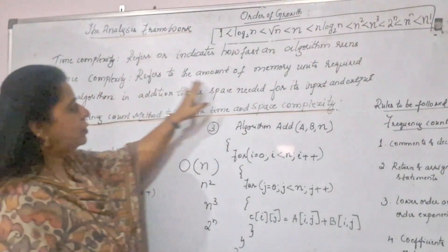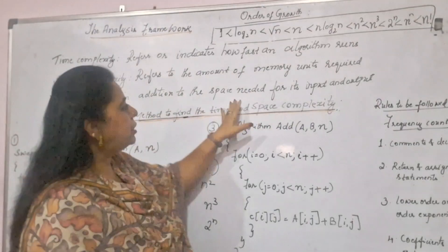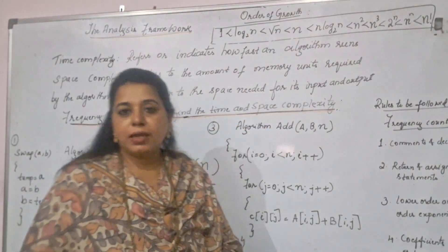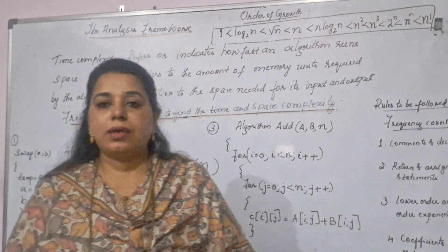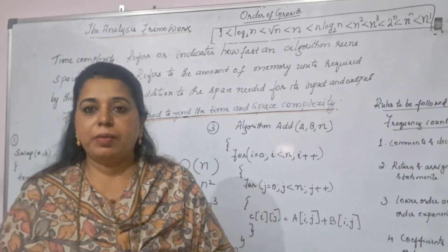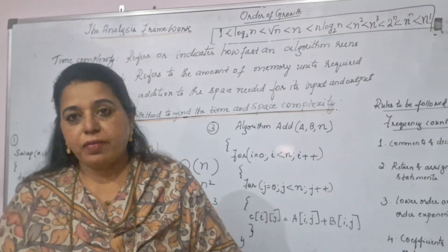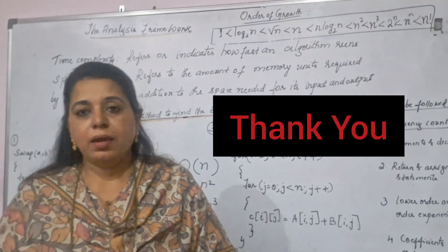Space complexity refers to the amount of memory units required by the algorithm in addition to the space needed for its input and output. So, how much space it is occupying in the memory. The structure in the algorithm definitely needs some space in the memory apart from the space that is needed for the input values and to display the output values.